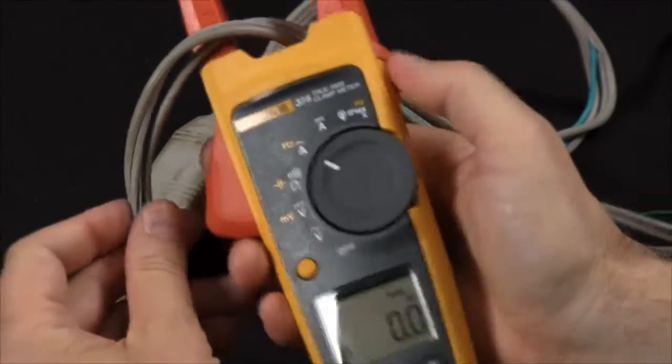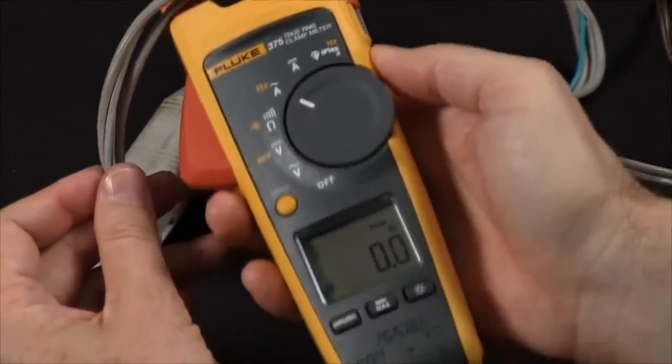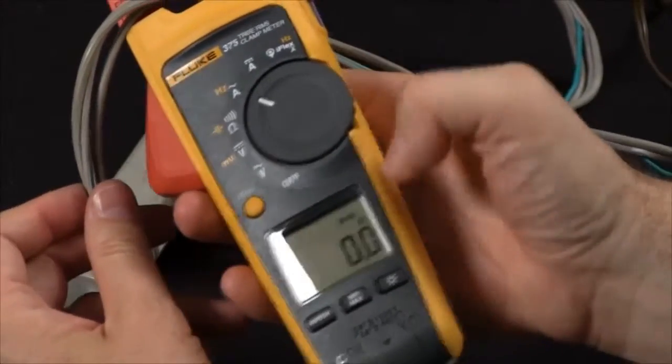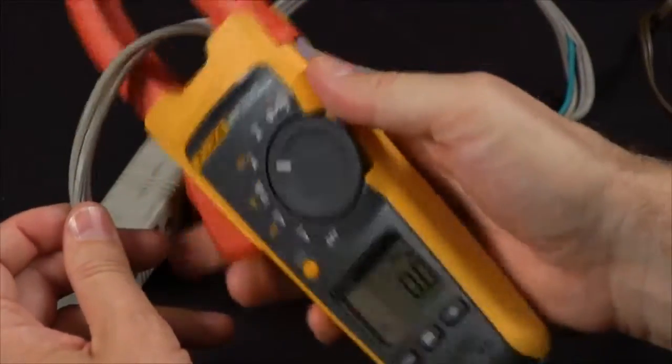A mistake that a lot of people make is trying to measure around the entire cord. You'll see that the flow going through my hot and returning through my neutral is going to cancel out, and we'll see a zero indication on the screen.